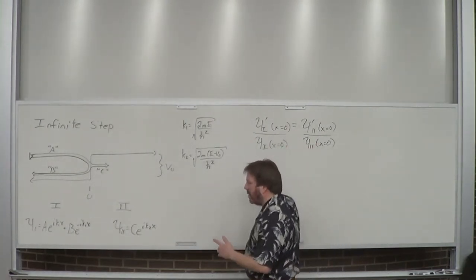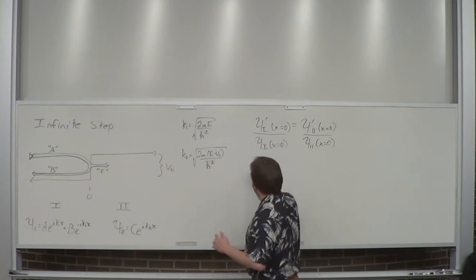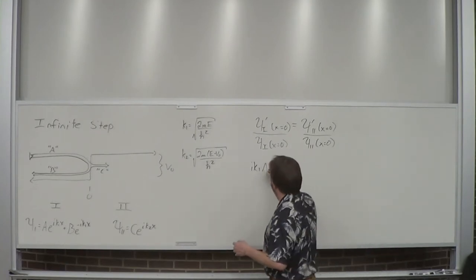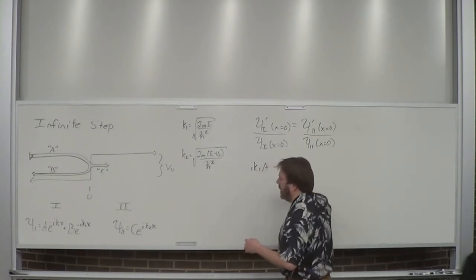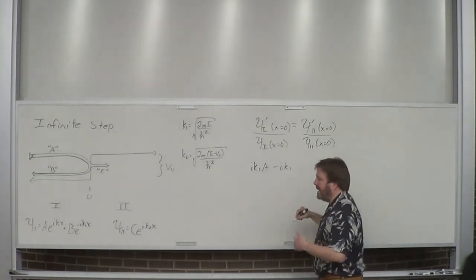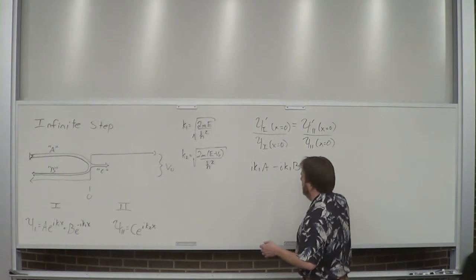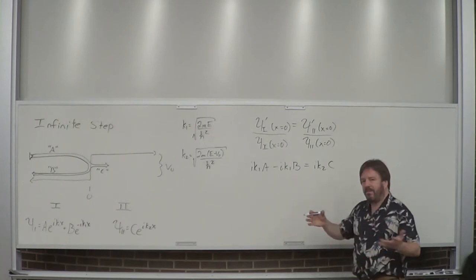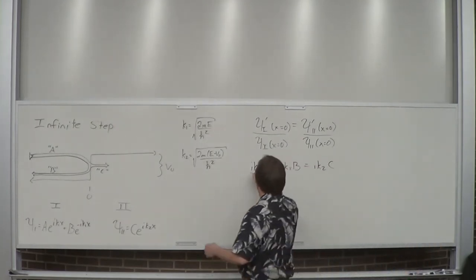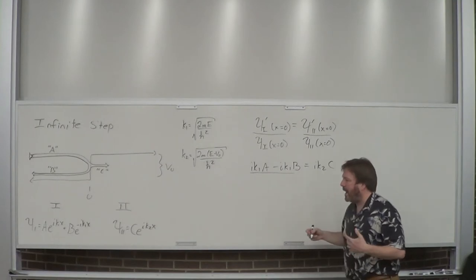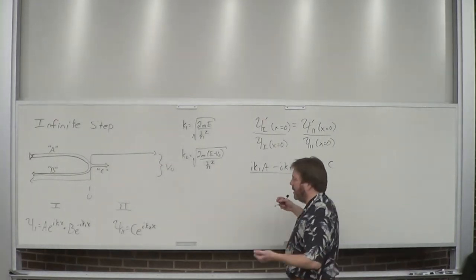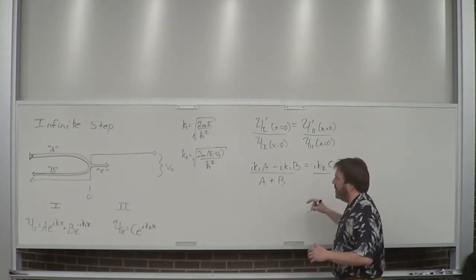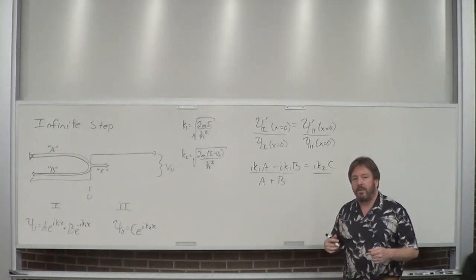Remember, I have some unknowns and I need to solve for them — like if A + B = 1 and A − B = −1, you can solve A and B. That's the big picture. The derivative gives: ik_1·A (since e^0 = 1) minus ik_1·B equals ik_2·C. Then I divide by the wave function at x = 0 in region one, which is just A + B, and region two at x = 0 is just C. I've already eliminated the exponentials, and I can get rid of the i's.